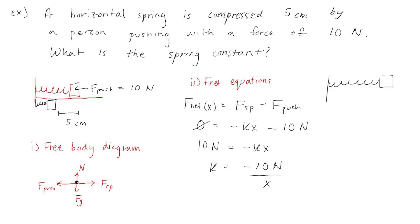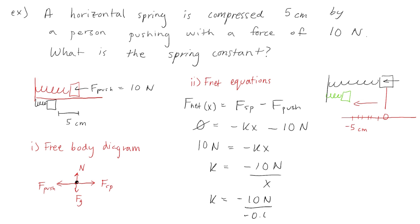If you're wondering what the correct value for the displacement is — well, remember we have our spring, then it gets pushed in and compressed. If we mark the equilibrium position as zero and we imagine there's a number line, and we're moving left along the number line, that means our displacement is negative 5 centimeters. Remember you have to convert this to meters. And when you do the math, you find that the spring constant is 200 newtons per meter.